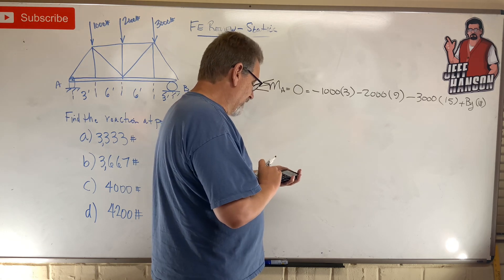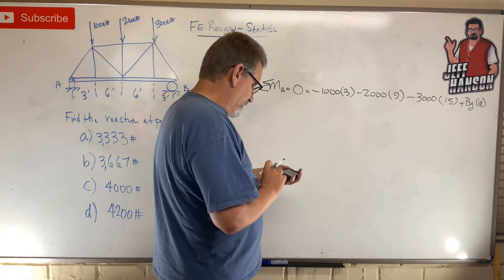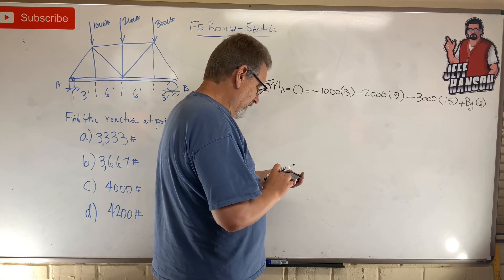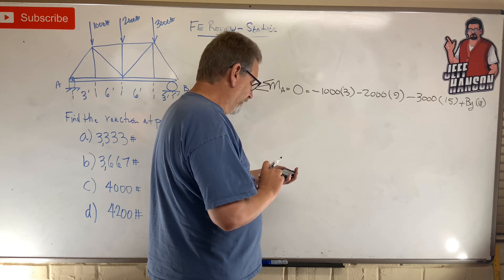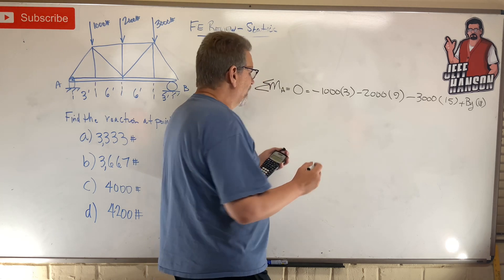...two thousand times nine plus three thousand times fifteen equals sixty-six thousand divided by eighteen. BAM, the reaction at B, three thousand six hundred and sixty-seven.